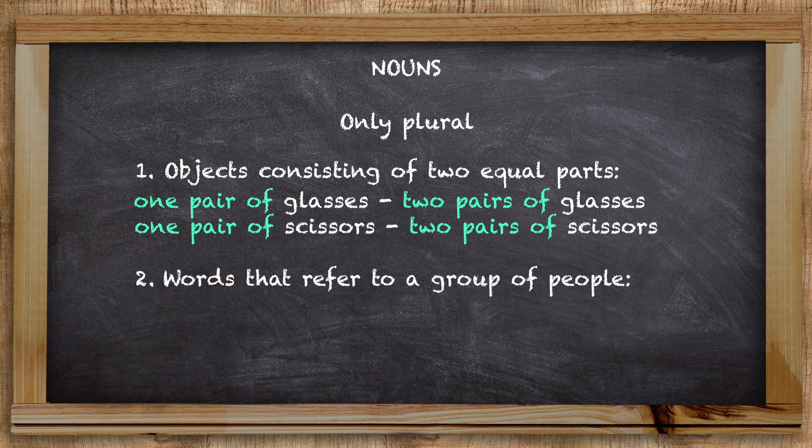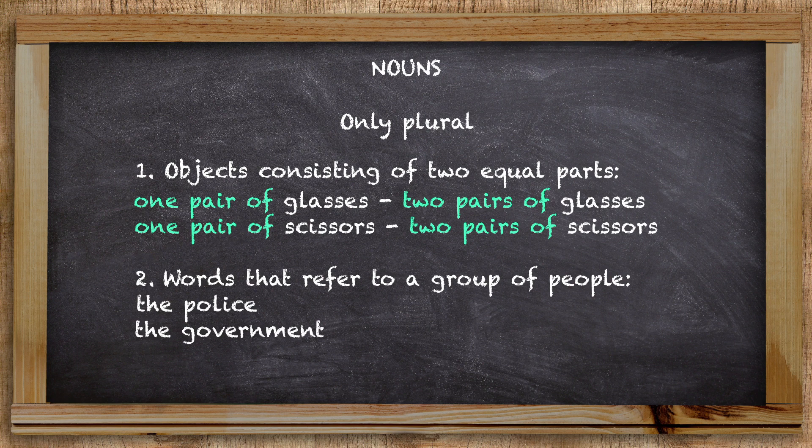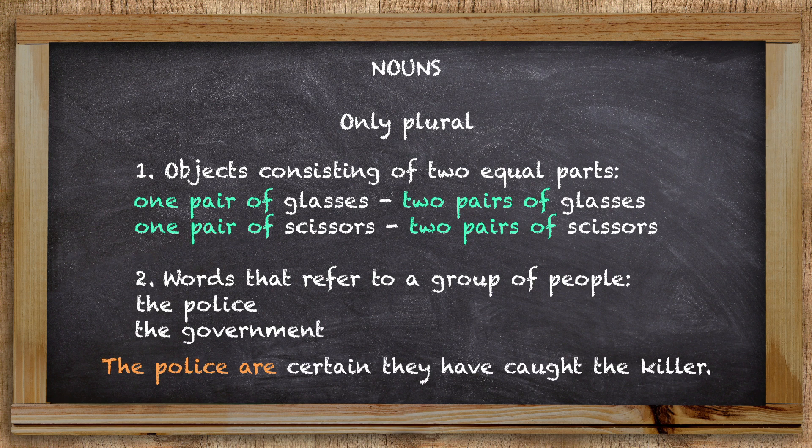Other words that only take a plural form are certain words that refer to a group of people. Examples are the police and the government. And keep in mind that these nouns also take plural verbs, as in the following sentence: The police are certain they have caught the killer.